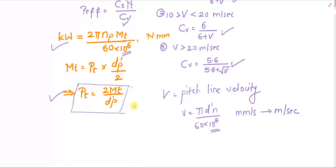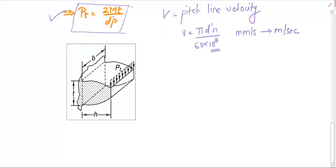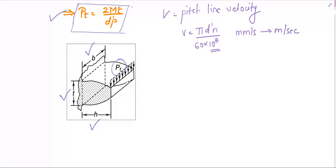Once the pitch line velocity is obtained, we can proceed with gear design. An important aspect is that when the load Pt acts on the gear tooth, the gear tooth has a face width b, a root thickness t, and a height h. When this kind of loading is present, we need to consider the design of the gear on the basis of beam strength, or indirectly, design against bending strength.